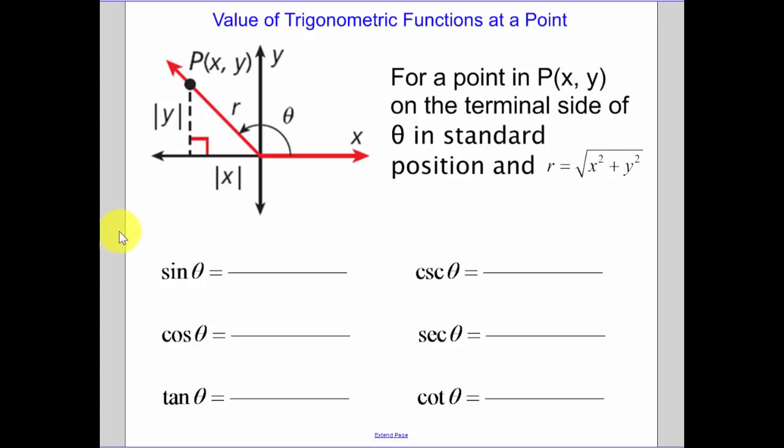Today we're going to be finding our trigonometric values at a specific point. The past few days it's been a point on the unit circle where our radius has been 1. Now our radius is going to change.